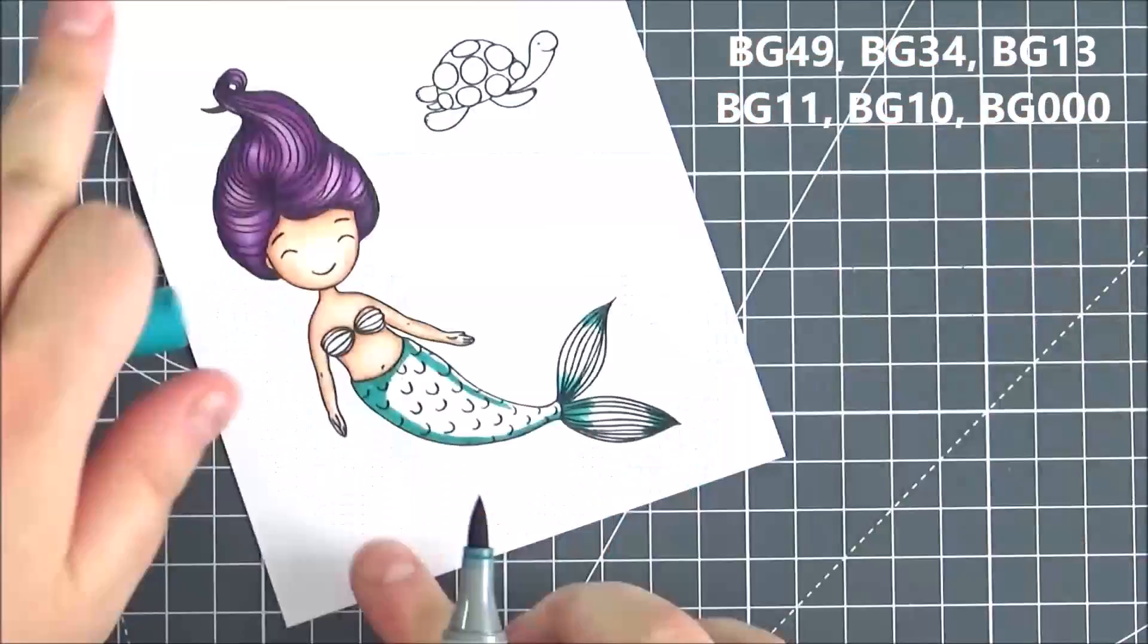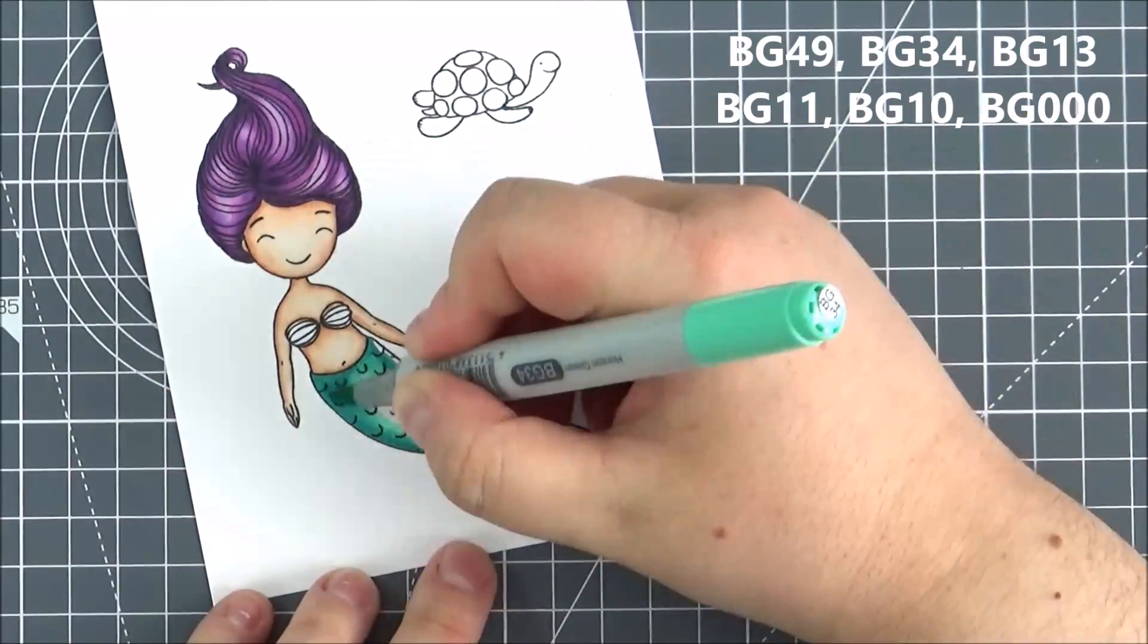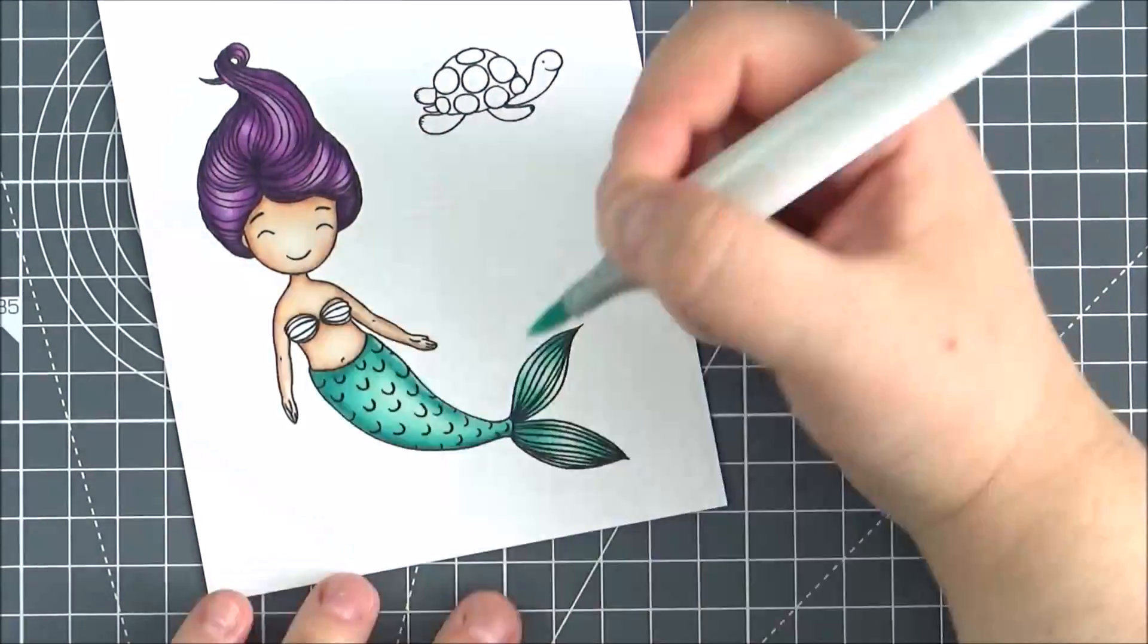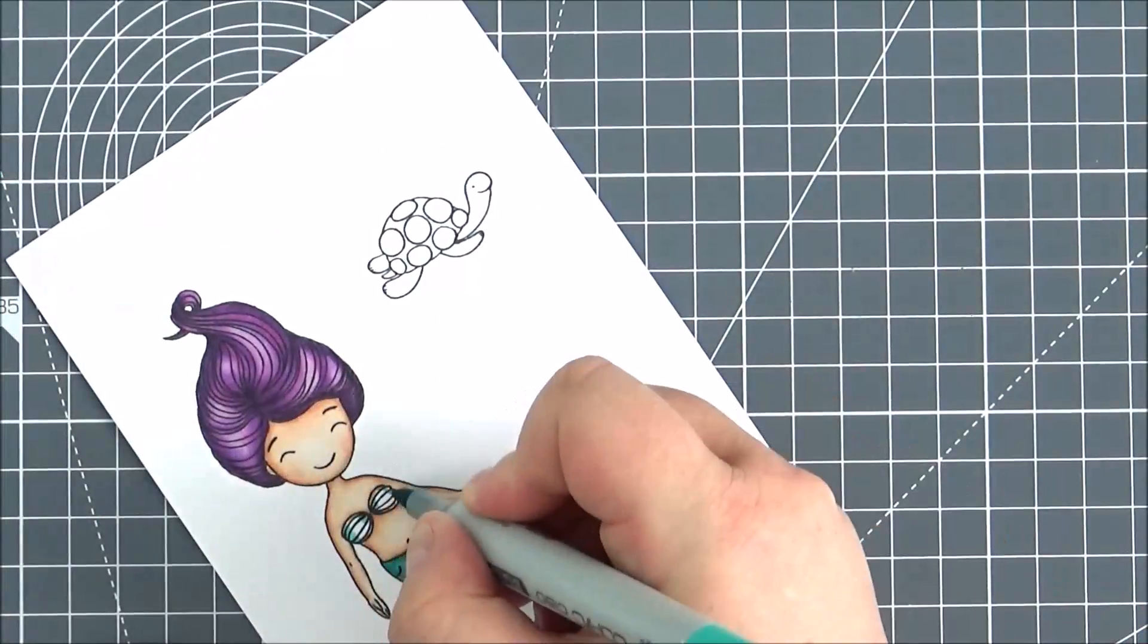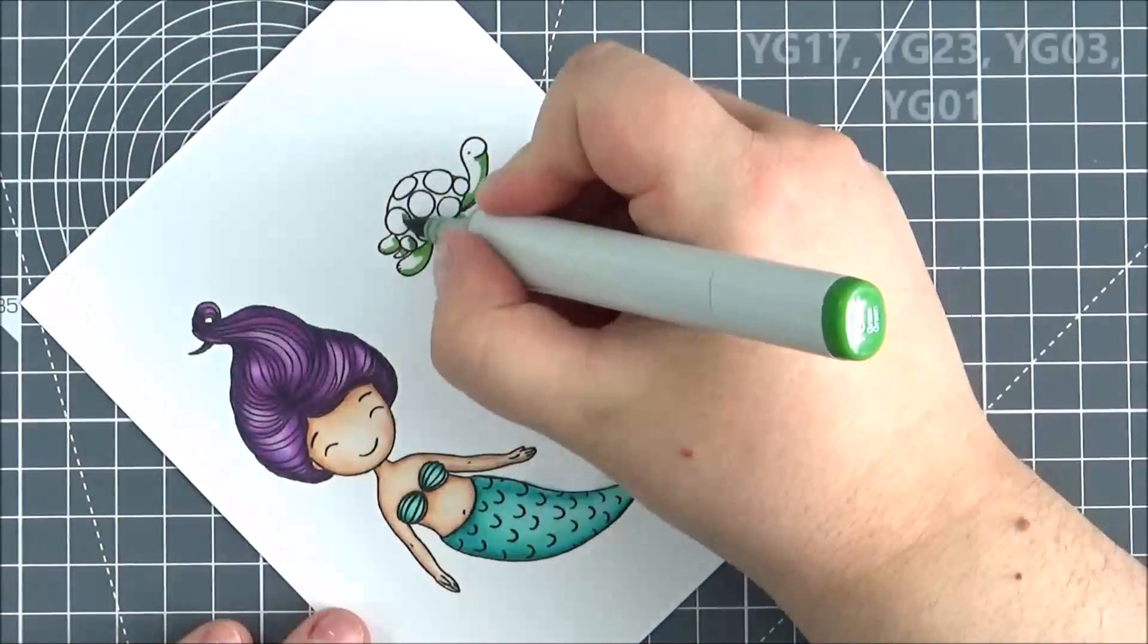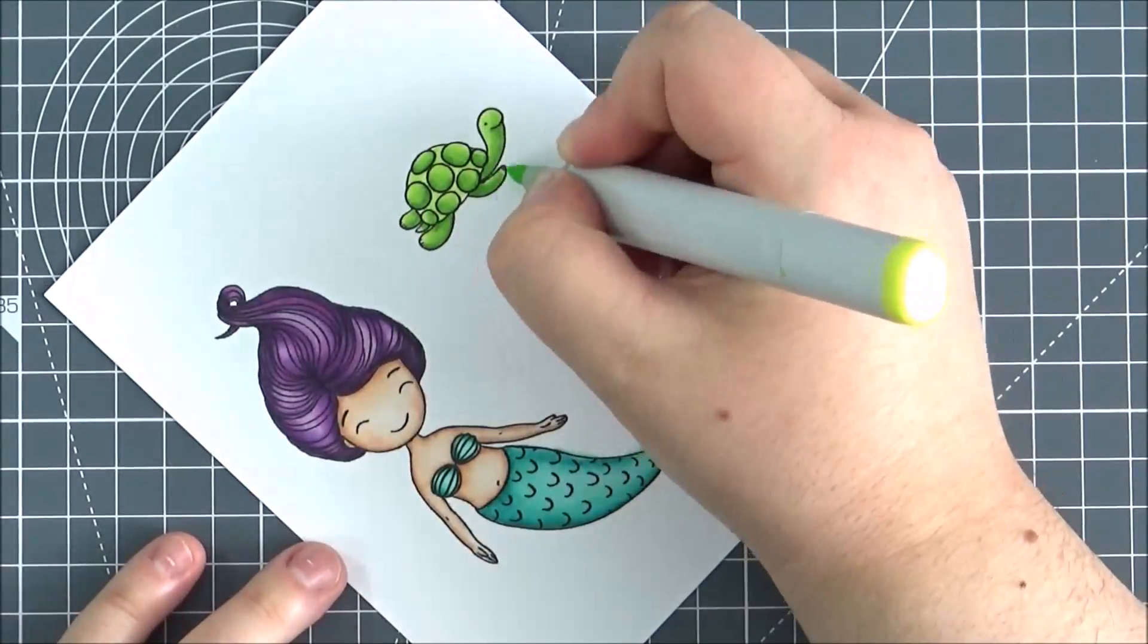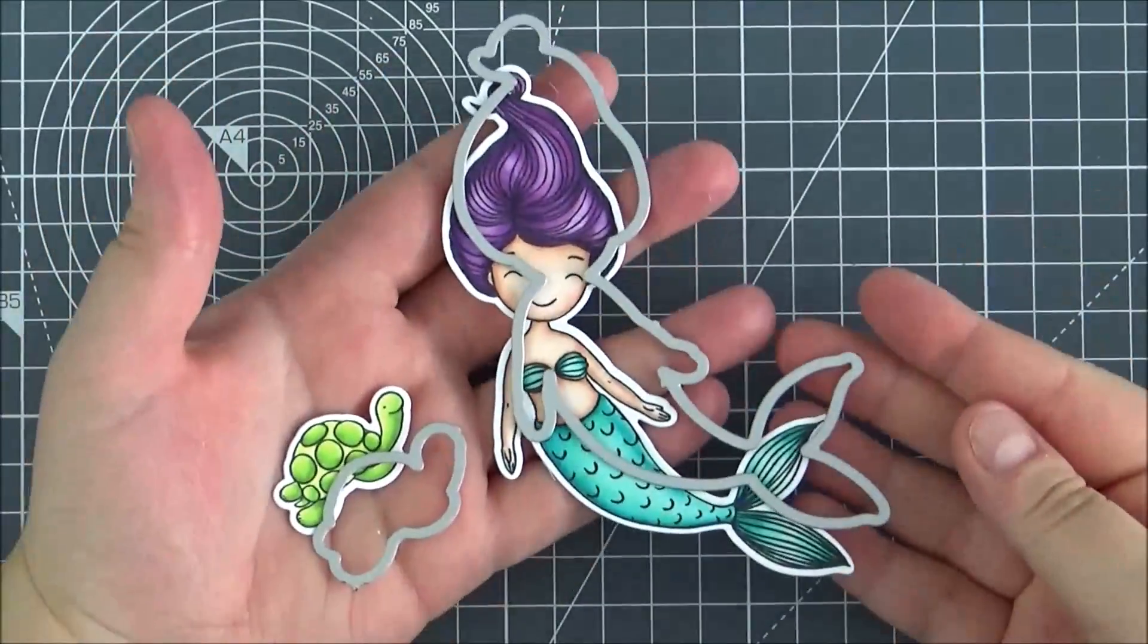I'm using aqua and turquoise tones for her tail, again going from darkest to lightest. I went in with a really pale shade of blue at the end to make it a little bit more interesting with the different blues and turquoises. I did her top in the same colors, and then coloring in the turtle with green tones from darkest to lightest. Once they were colored in, I cut them out with the coordinating dies.